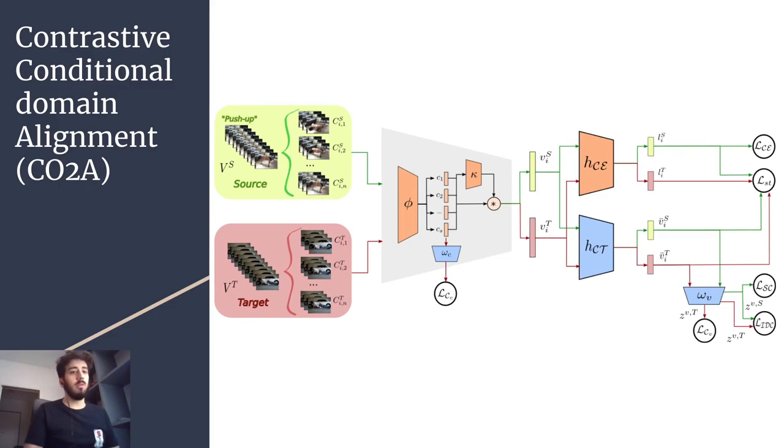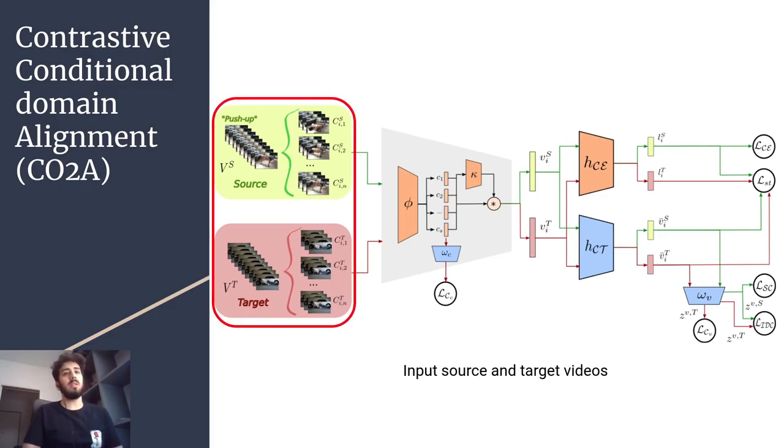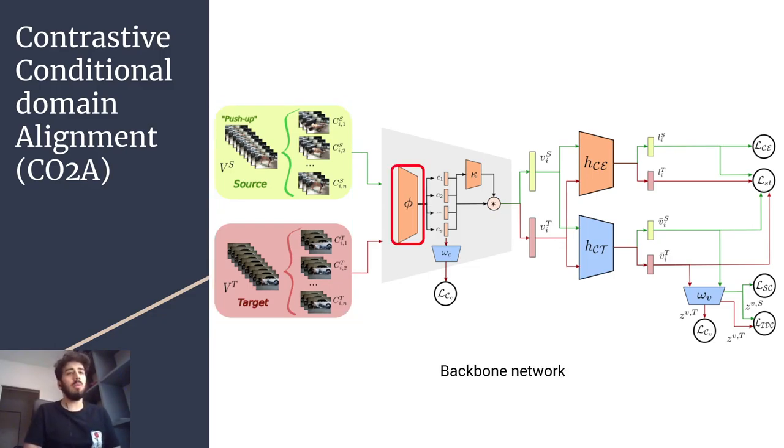I'm now going to explain the parts of our model. First we start with source and target videos, which are then divided into clips where we augment target clips. We use the backbone network PHY that extracts clip level feature representations. Then we use a projection head, as is normally done on contrastive learning, to further project those features. Then on the projected features we apply a contrastive loss, where we consider positives different augmentations of the same clips and negatives other clips. Note that this is only done for target data, as we don't augment source data.